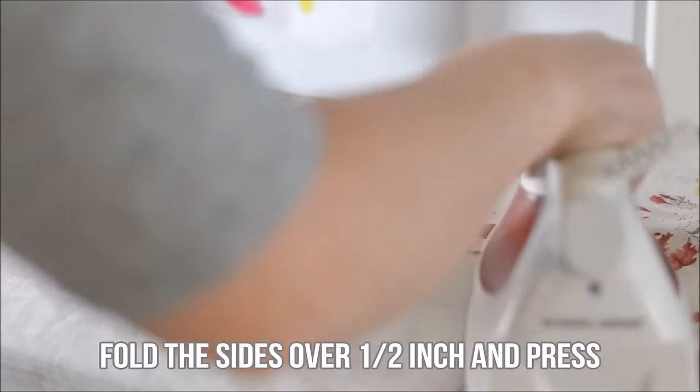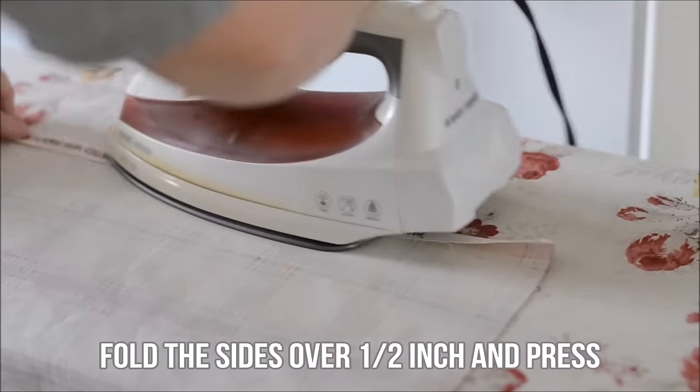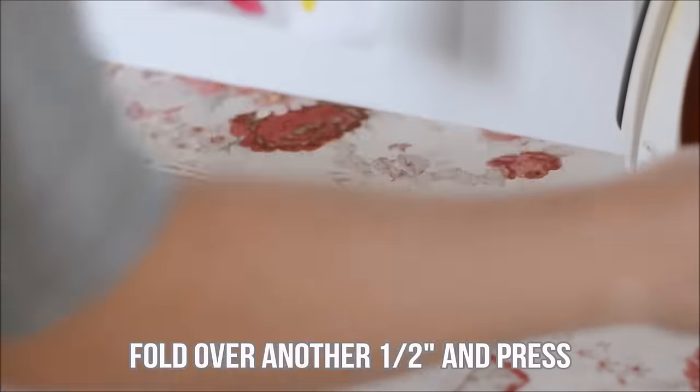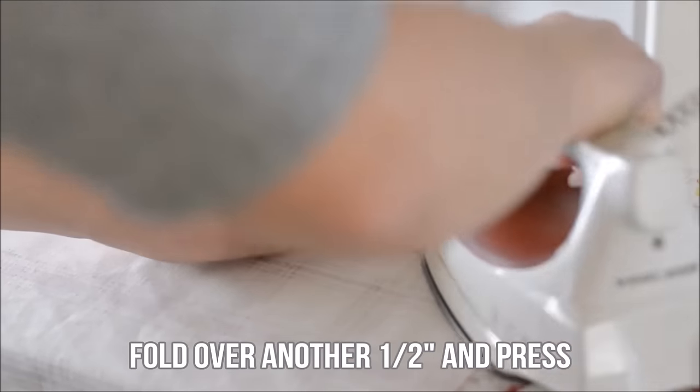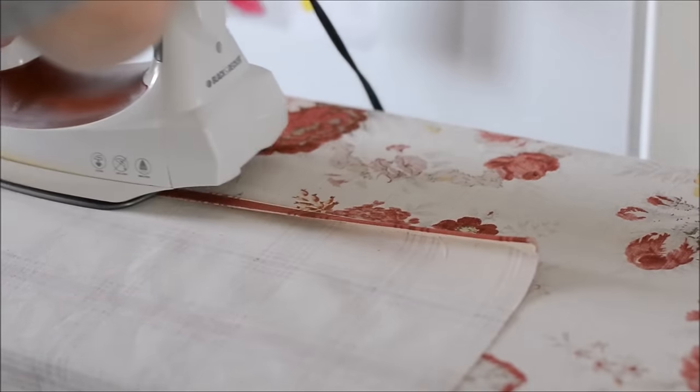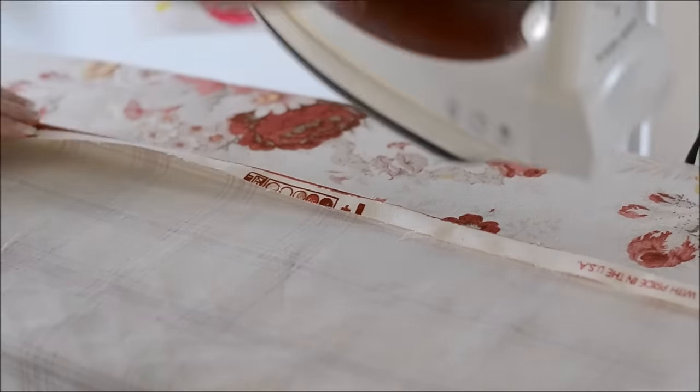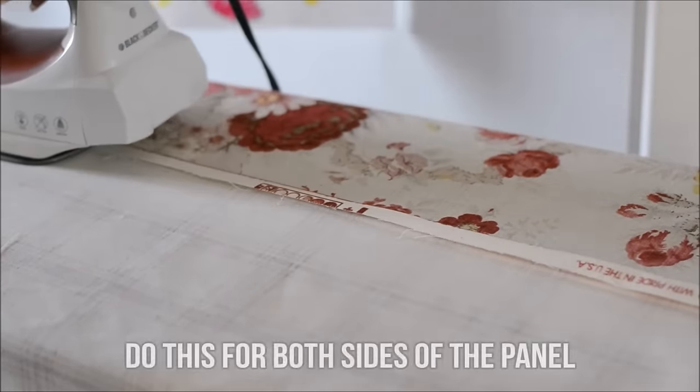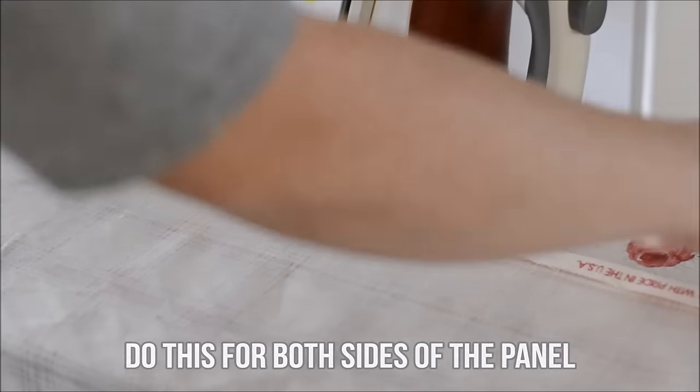Next you're going to fold the sides over half an inch and press them with an iron. And then fold those sides over another half an inch and press. Do this for both sides of your curtain panel.